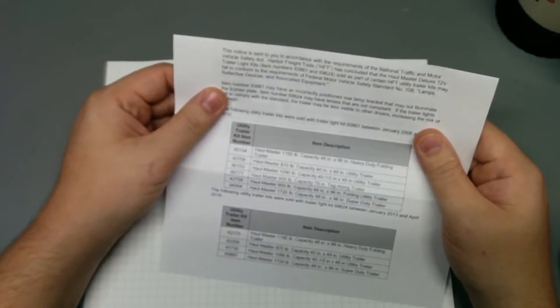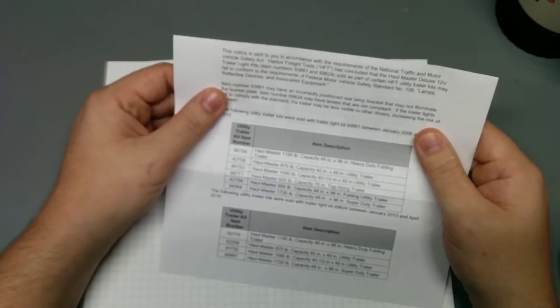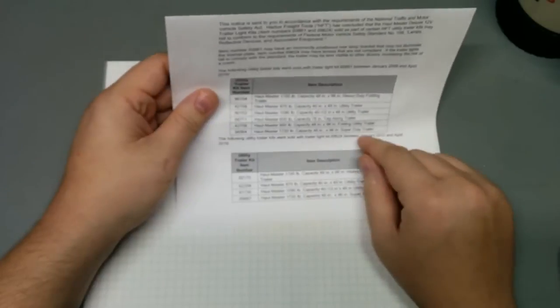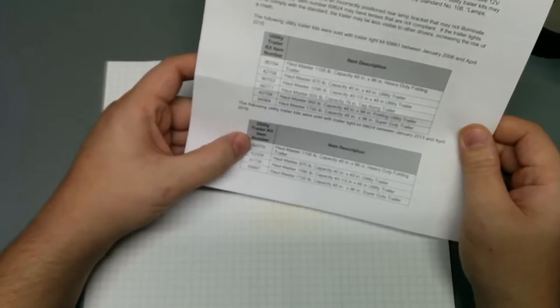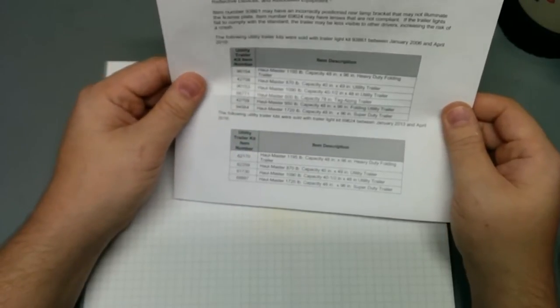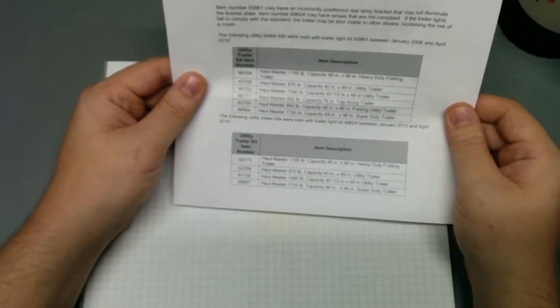And the following trailer kits are used with item 69624, which is item 62170, the Hallmaster 1195 pound capacity, 48 by 96 heavy duty folding trailer.